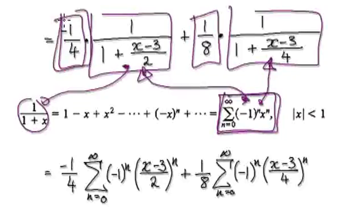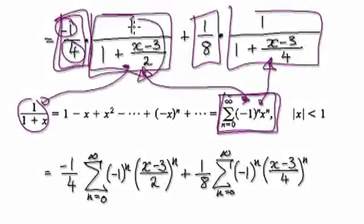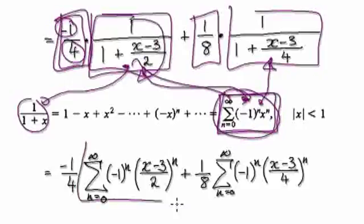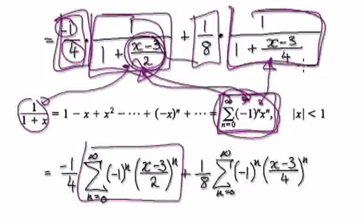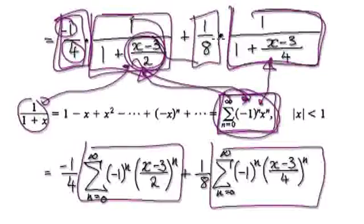So you've got your minus a quarter here, minus a quarter. And then this block here — put this into here — that will then give you this. Remember Rx here, this is Rx here. So this block here will then become this block here.